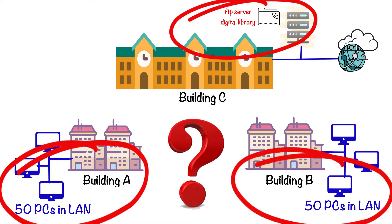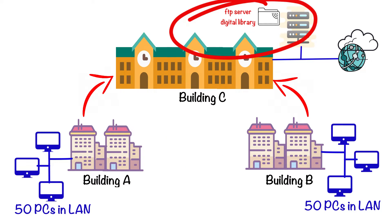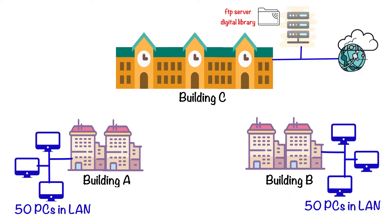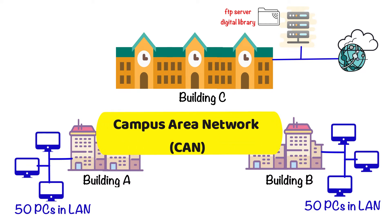Since building A has its own local area network, and same for building B, building C has all these resources — but how can building A and B access these resources from building C? In order to share these resources, building A and B should have interconnectivity with building C, otherwise they won't be able to access those resources. Since PCs are connected within the same building it's called a local area network, so what type of network should we use so that two buildings can connect with each other?